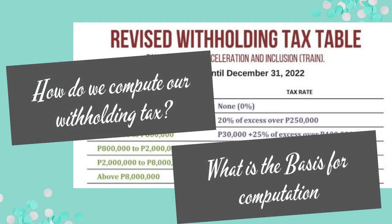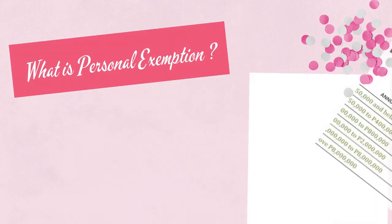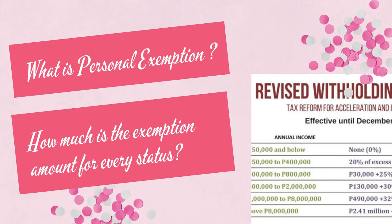How do we compute our withholding tax, and what is the basis for computation? What is personal exemption, and how much is the exemption amount for every status?